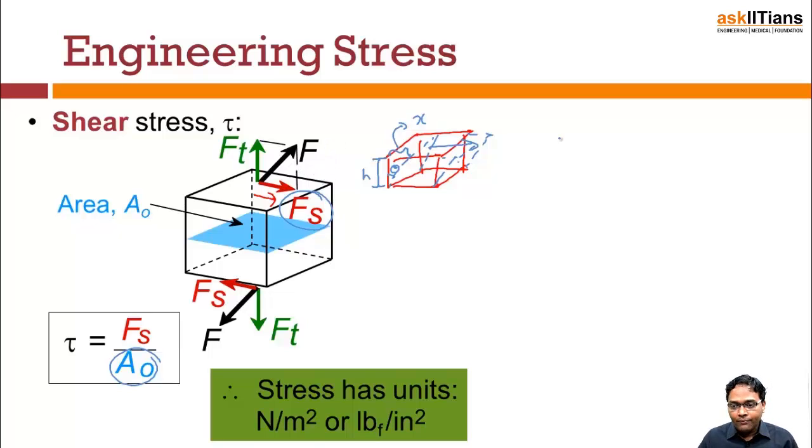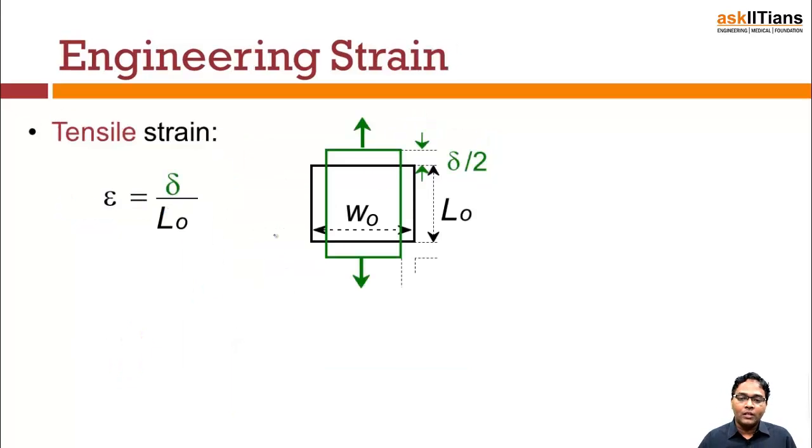If I say I have a force that is acting at an angle theta, in that case we need to find out the two components: there is going to be a horizontal component and there is going to be a vertical component. Both the components have to be taken separately. The vertical component is going to result into the perpendicular stress and the horizontal one results into shear stress. So this is what we get.